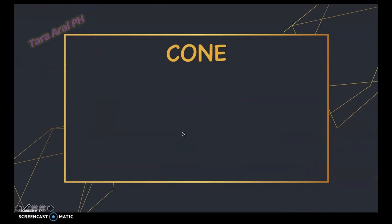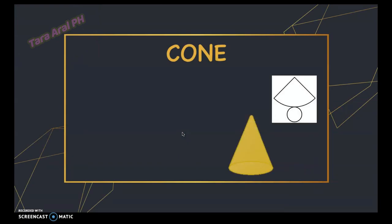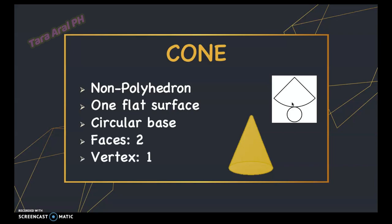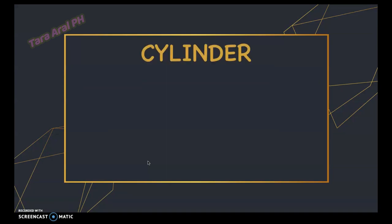Next is a cone. A cone is a non-polyhedron and it has one flat surface — a circular base — two faces, one vertex, and no edges. Take note that a cone has only one base and it's a circle.